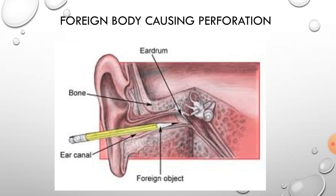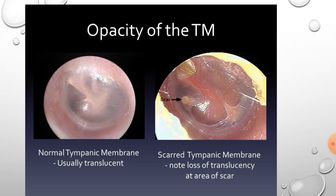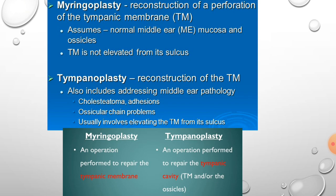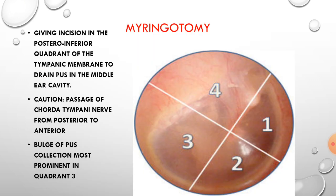Foreign bodies can cause perforation of the tympanic membrane. In inflammatory conditions, comparing normal with scarred tympanic membranes: the normal tympanic membrane is translucent, but when it becomes scarred there is loss of translucency at the scar areas, indicating an inflammatory process. Myringoplasty is an operation performed to repair the tympanic membrane, while tympanoplasty is an operation to repair the tympanic cavity, ossicles, or parts related to the middle ear cavity.